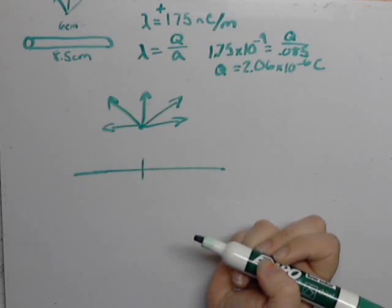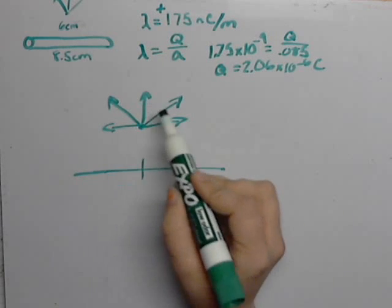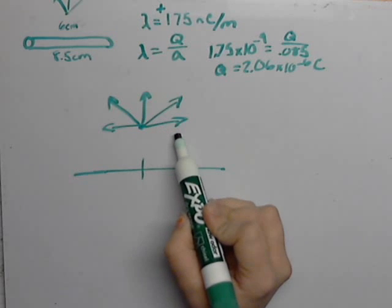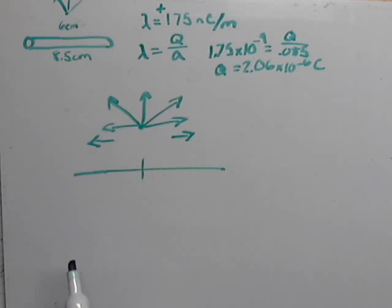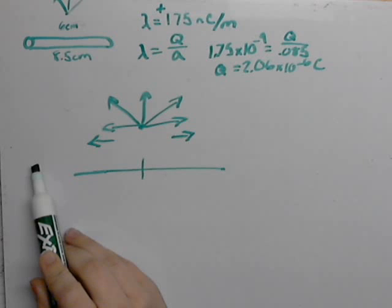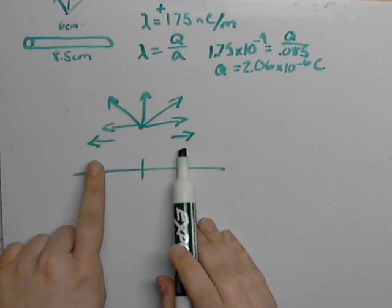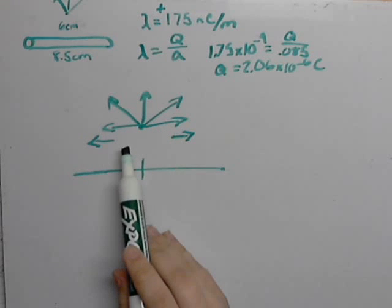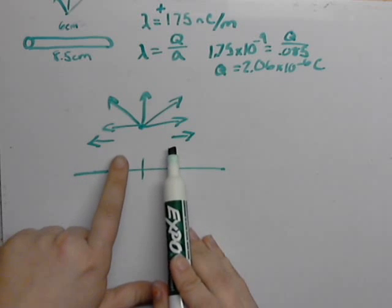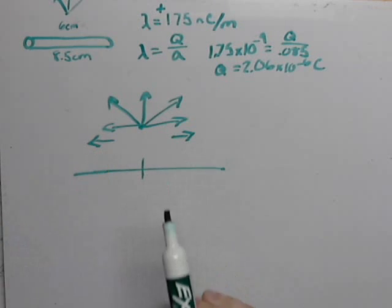But since this is at the midpoint, anytime when you break this up into components, and you have an Ex going this way, on this side there's always an Ex of the same value in the opposite direction, so that way they cancel. This is only because this is at the midpoint of the wire. If this was anywhere else other than the midpoint, the electric fields in opposite directions would not be the same magnitude and they wouldn't cancel. So knowing this, all we have to do is calculate the y component of the electric field.